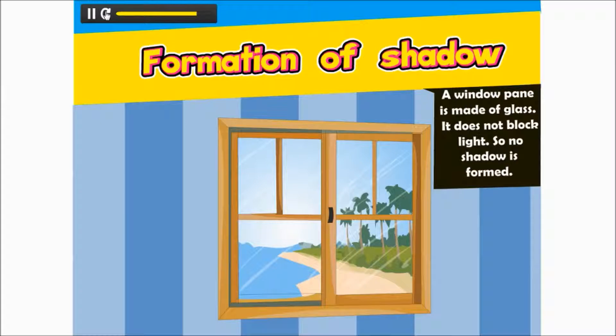A window-pane is made of glass. It does not block light. So no shadow is formed.